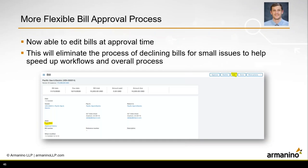In accounts payable, the first change is a more flexible bill approval process — new functionality designed to eliminate time and headache from declining bills based on small issues, helping speed up your approval workflow. When a bill is in your queue for approval, you can now add, edit, or remove lines on the bill as long as there's no change to the total amount. You can also add attachments, edit reference numbers, change the due date, or place the bill on hold.